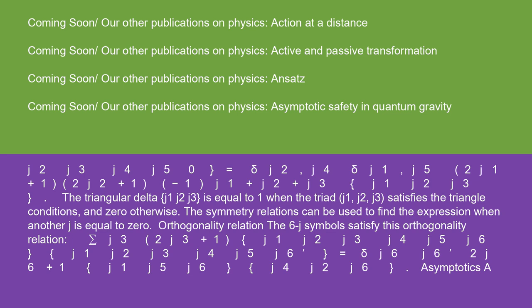The symmetry relations can be used to find the expression when another J is equal to zero. Orthogonality relation: The 6J symbols satisfy this orthogonality relation. Sigma J3 times 2J3 plus 1, times J1, J2, J3, J4, J5, J6, times J1, J2, J3 prime, J4, J5, J6 prime equals delta J6 J6 prime over 2J6 plus 1, times delta J1 J5 J6, delta J4 J2 J6.